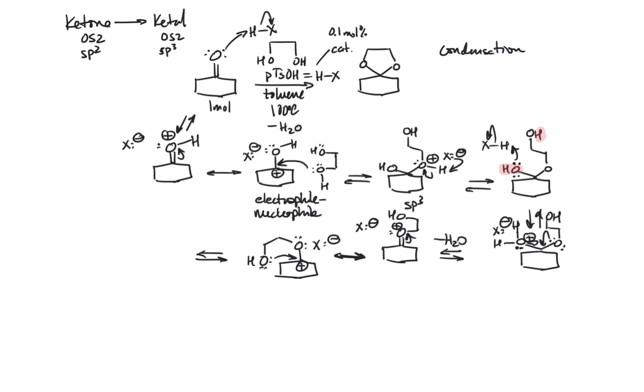As you learn these mechanisms and you draw them out, you'll see the nuances in how the intermediates react. So we said it was a five-membered ring. Now this oxygen is still positively charged. We have the counter ion.